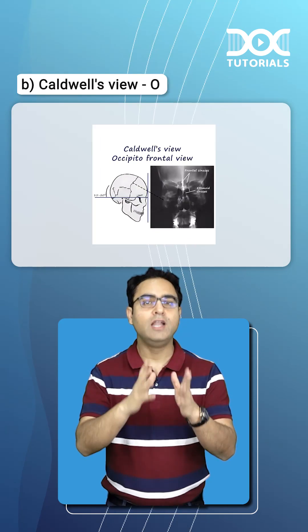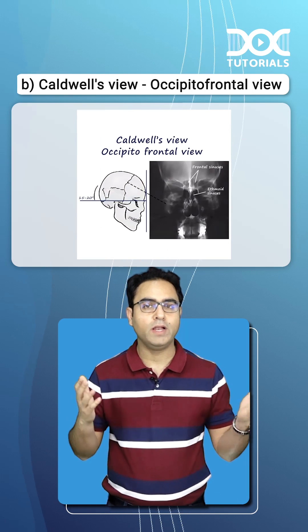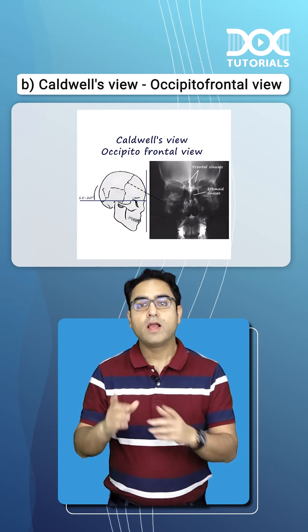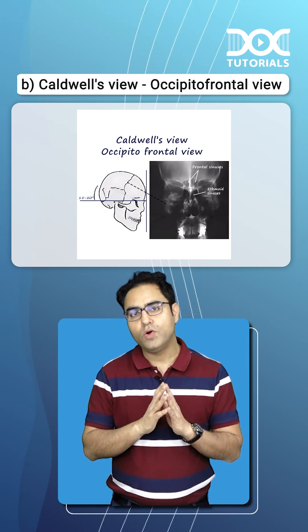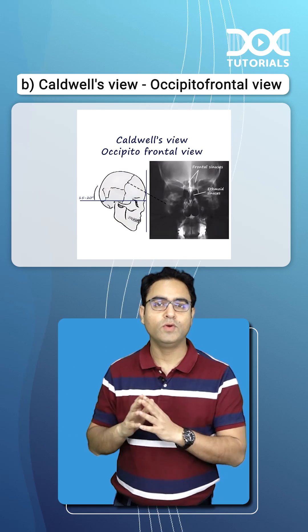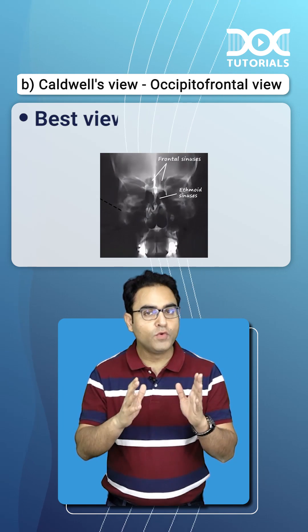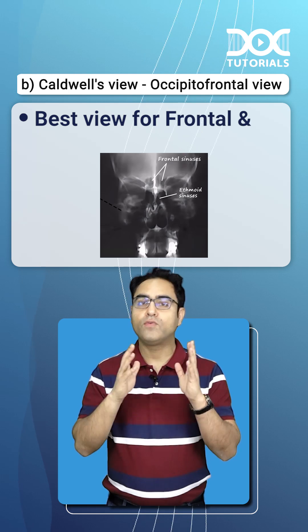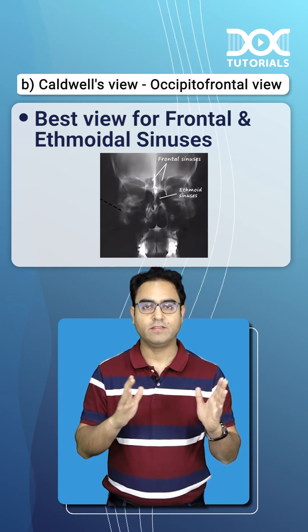The second x-ray for the sinuses is Caldwell's view, which is not that commonly done. Caldwell's view is technically the occipito-frontal view, and it is the best view for the frontal and ethmoid sinuses.